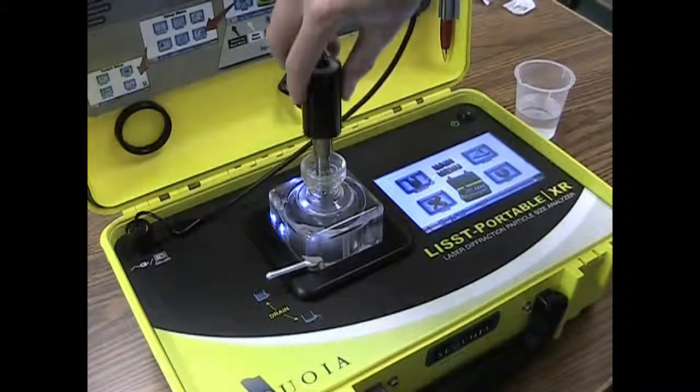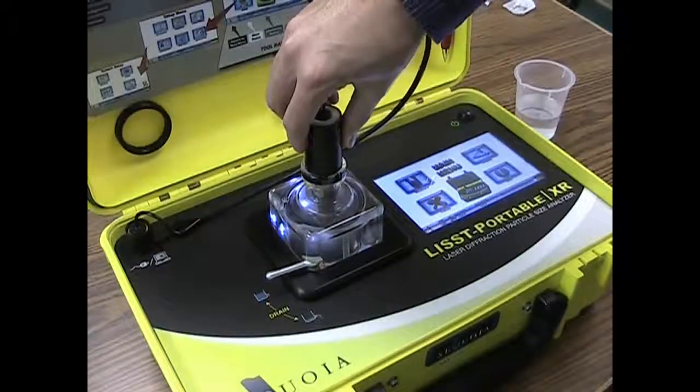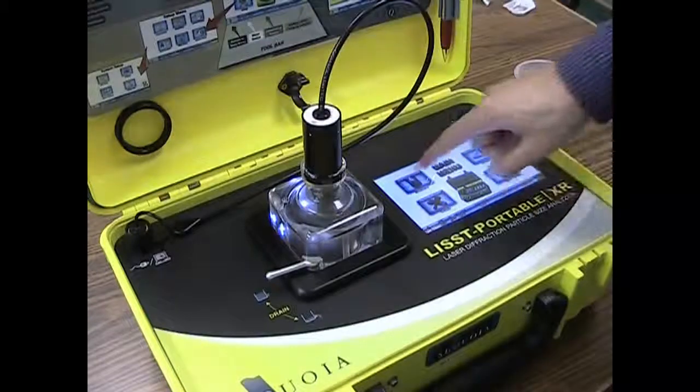Replace the ultrasonic probe and turn on the mixing pump. This will ensure your dry sample is well dispersed in the sample chamber.